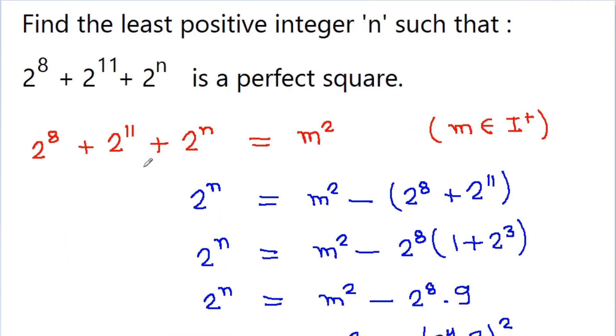Now the second method to solve this equation: we have 2 to the power 8 plus 2 to the power 11 plus 2 to the power n equals m squared.